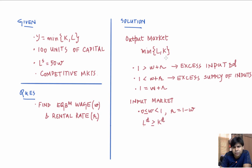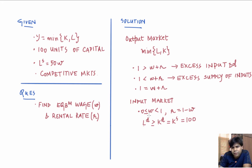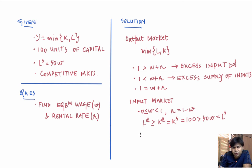With the Leontief production function min(L, K), the firm demands equal amounts of labor and capital when both prices are strictly between zero and one. However, if w is zero the firm can demand more labor than capital. So labor demand whenever w is between zero and one always exceeds or equals capital demand. For market clearing, capital demand must equal capital supply of 100. But labor supply is 50w, and for all w in (0,1), 100 always exceeds 50w — meaning labor demand strictly exceeds labor supply. So no wage between zero and one can be market clearing; this case is ruled out.